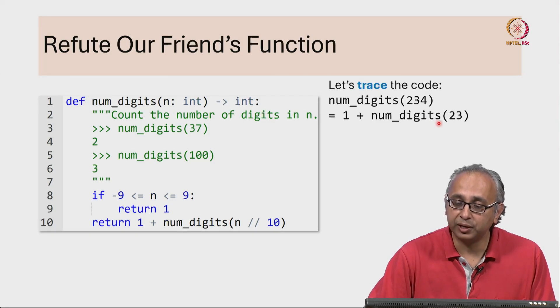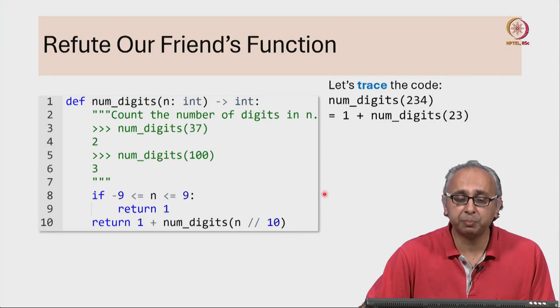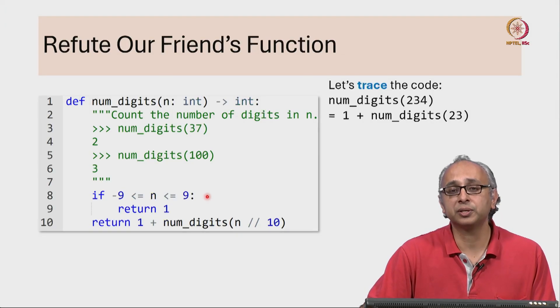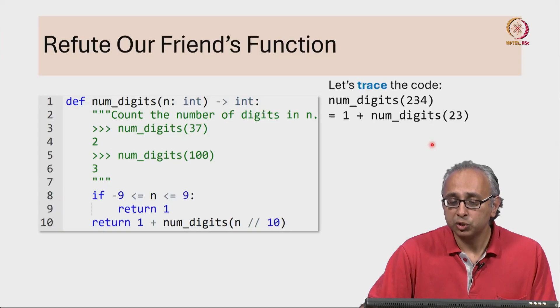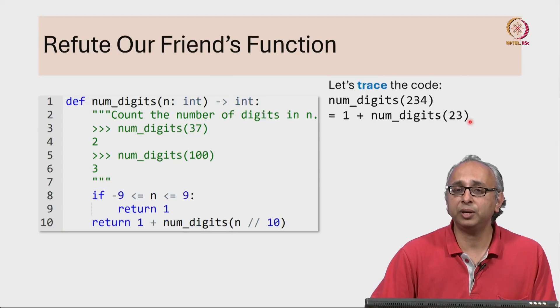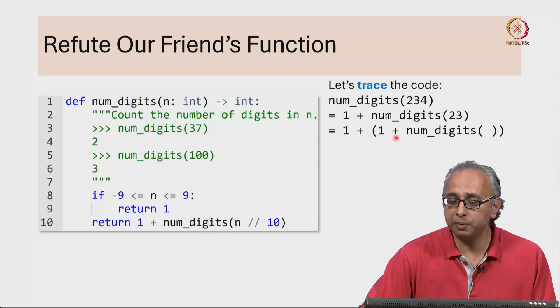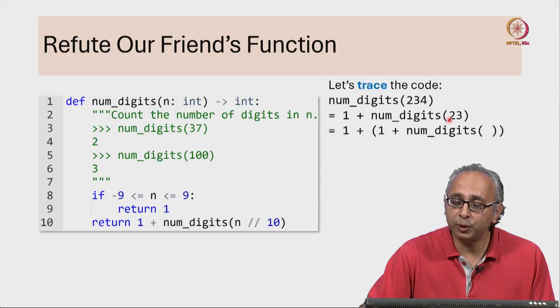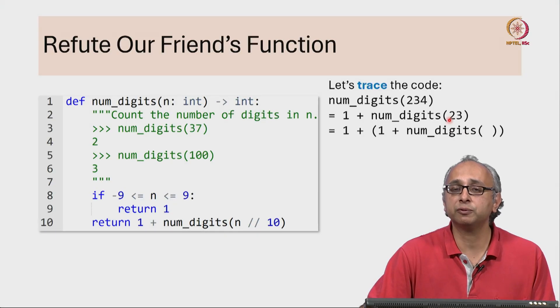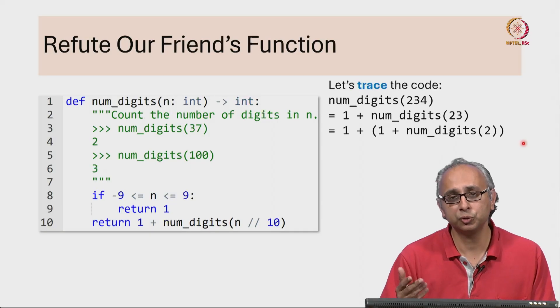Now how do we calculate num digits of 23? Well that would be a recursive call and 23 is also not the base case. So num digits of 23 would be 1 plus something. So the overall answer would be 1 plus 1 plus num digits of something and that something would be 23 floor division 10 and 23 floor division 10 of course is 2.